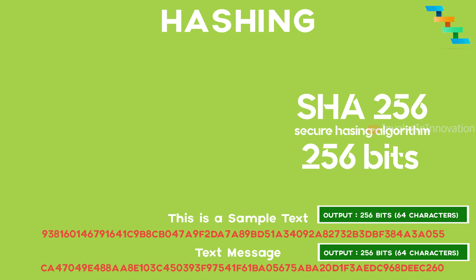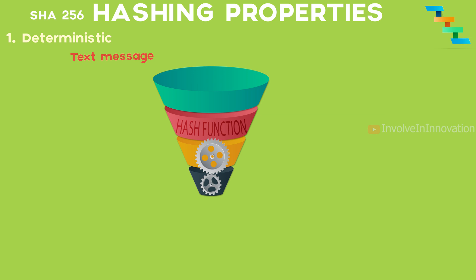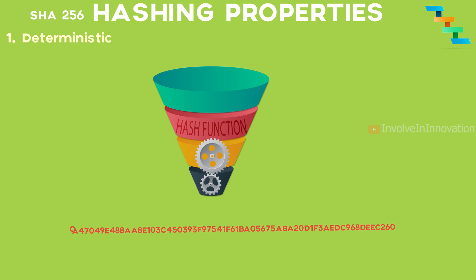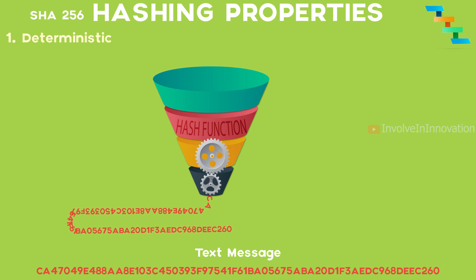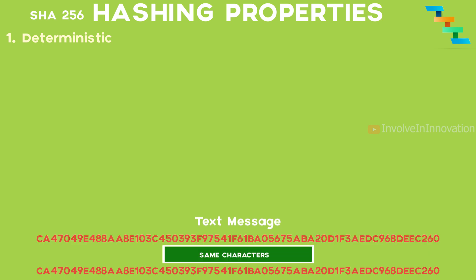Now we will see what properties a hash function must possess. The cryptographic hash function SHA256 must be deterministic. For a particular input value, the output must always be the same, any number of times. For example, when we input the string 'text message' to the hash function, we get a 64-character hash starting with 'CA470'. Inputting the same string again produces the exact same output. This is deterministic.